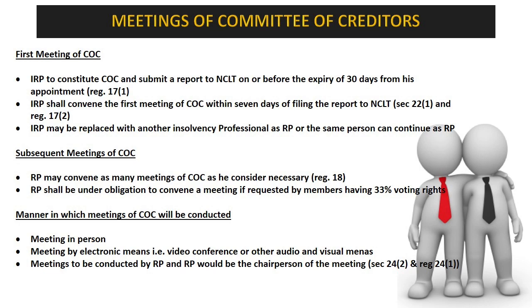In the first meeting, the IRP is replaced by the RP or the IRP continues as RP. As for subsequent meetings of the COC, there is no limit in the code or regulations on the number of meetings that an RP can have. The only requirement is that the RP must give a notice of at least 7 days for convening a meeting of COC. That notice of 7 days can also be reduced to 24 hours in case all the members give consent, but not less than 24 hours.